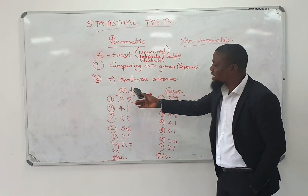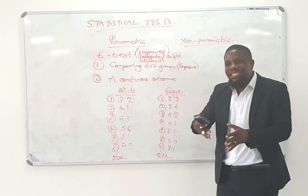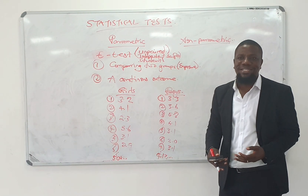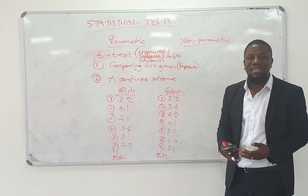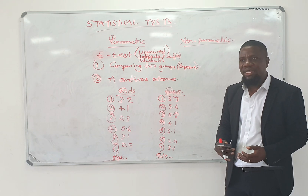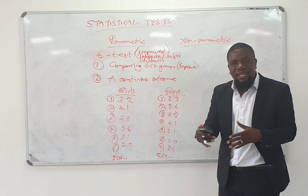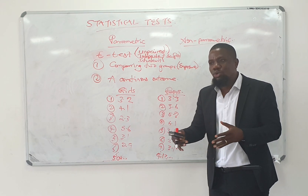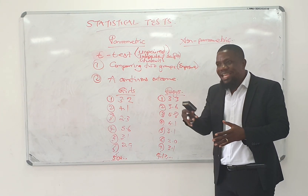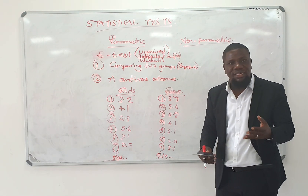If a child is exposed to a certain sex, does it explain the age at which they will start school? My child being a boy and the child being a girl, does that explain the age at which they will start school? Does the sex explain the outcome of the age? That's the question.